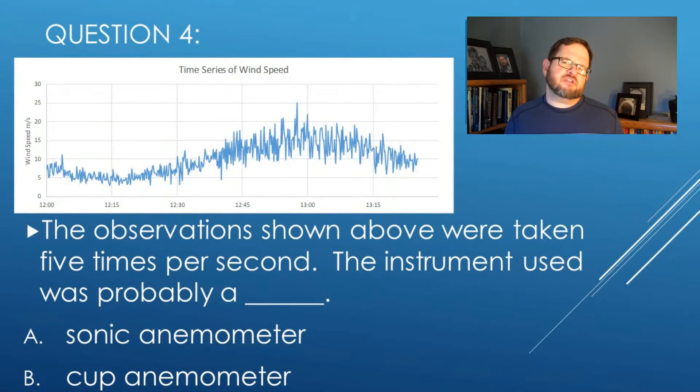The instrument that would have been used would probably be A, a sonic anemometer, or B, a cup anemometer. Which of these instruments could actually take measurements five times a second? Make a choice between those two options to get feedback before we're done with this lecture.